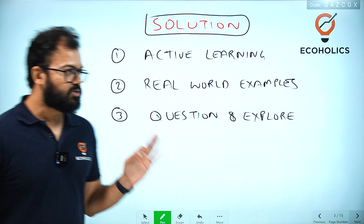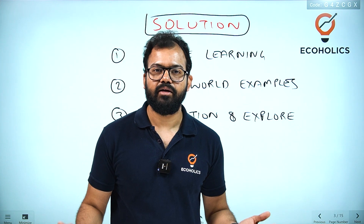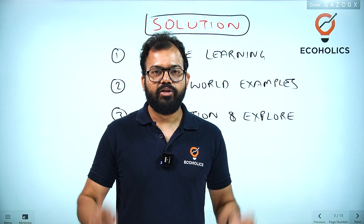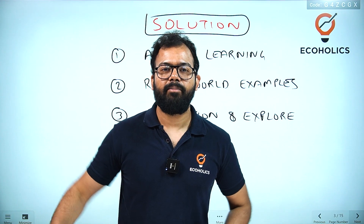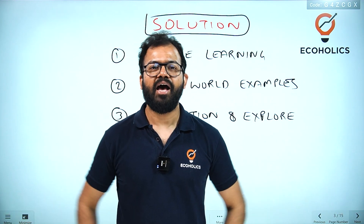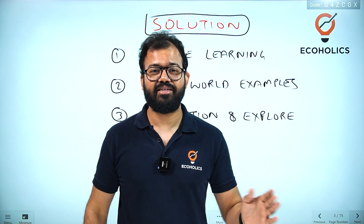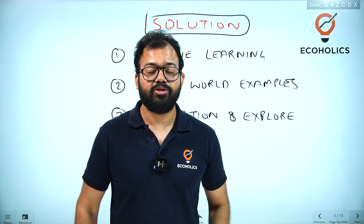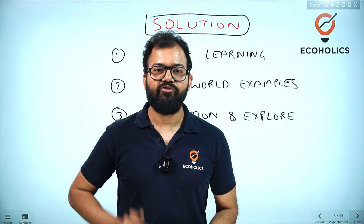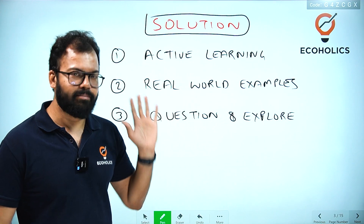There are three solutions to this counterintuitive problem. The first is active learning. What most people do is simply open the book and read — that is reading, not learning. Learning means trying to grasp the concept, reading line by line, word by word. People think 'I will finish this book in seven days' and say 'I've finished reading microeconomics or macroeconomics.' But nothing in economics can simply be finished. You have to learn word by word, line by line — if you violate this, you will struggle in this subject.